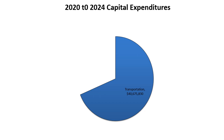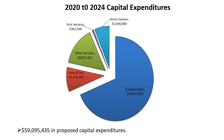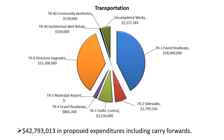In terms of capital expenditures, our transportation area is by far the largest. Our parks and recreation area is about $5.5 million. Other services is about $8.85 million. Protective services is $362,000, and storm sewers about $3.7 million. Overall expenditures are about $59 million. The largest portion of uncompleted works is paved roadways — $18 million planned over the five-year period. Sidewalks are $2.8 million, traffic control $3.5 million, and structure upgrades total about $15.2 million, so there are very significant contributions to our transportation area.